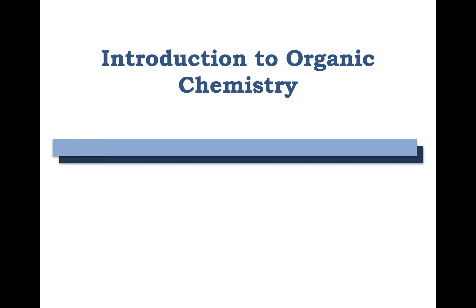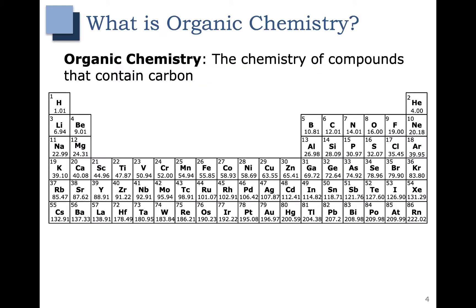In this video we're going to introduce you to organic chemistry — what it is and why it's important. Simply put, organic chemistry is the chemistry of compounds that contain carbon. You can see carbon right there in the periodic table. Carbon is a very important element; it is the backbone of what we call organic life.